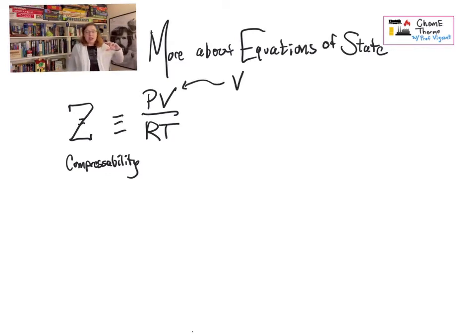One of the ways in which we do this is most equations of state are written in terms of Z, compressibility factor or compressibility. And so Z is defined as PV divided by RT.